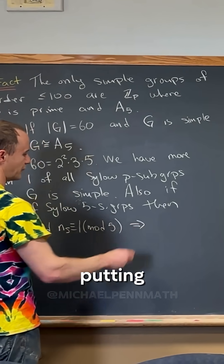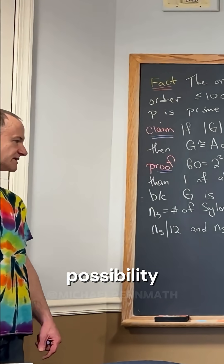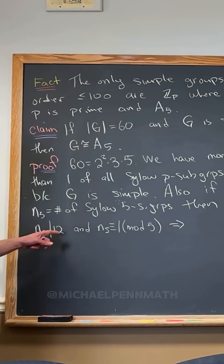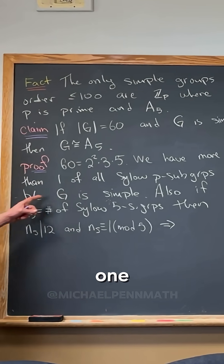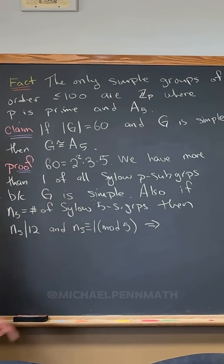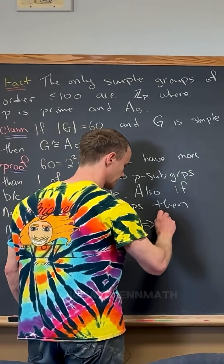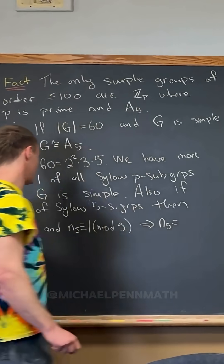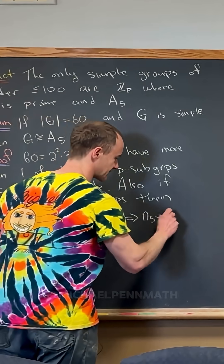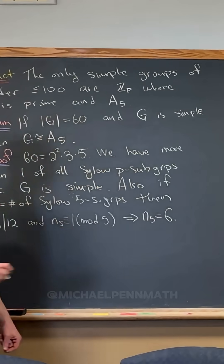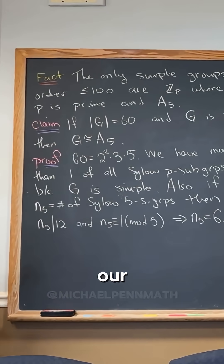Now putting those two things together, what's the possibility? It's not equal to 1, right? It's not equal to 1 because G is simple. So what's the only possibility? N5 is 6. Great. So that's our start.